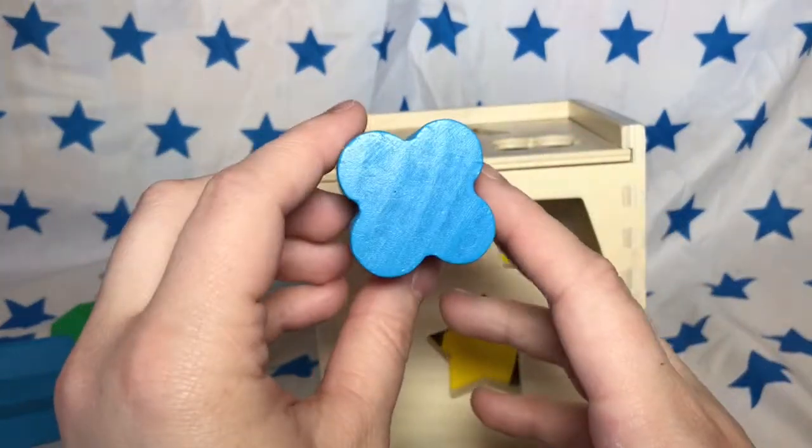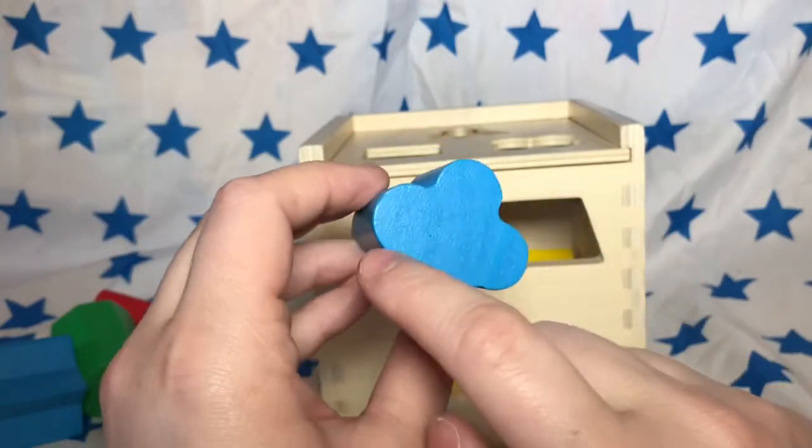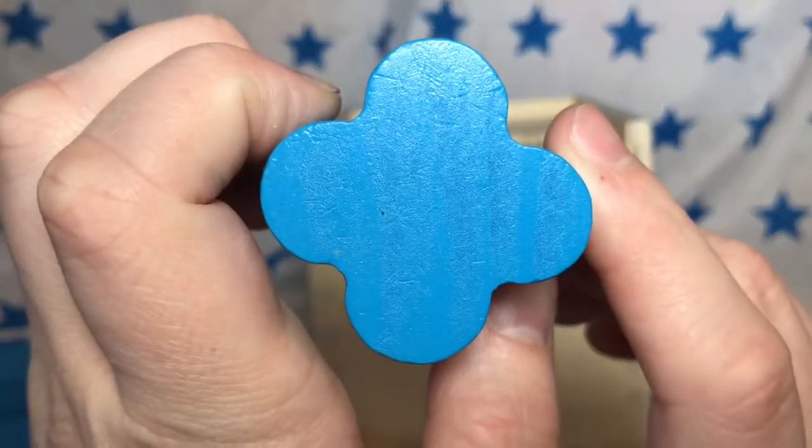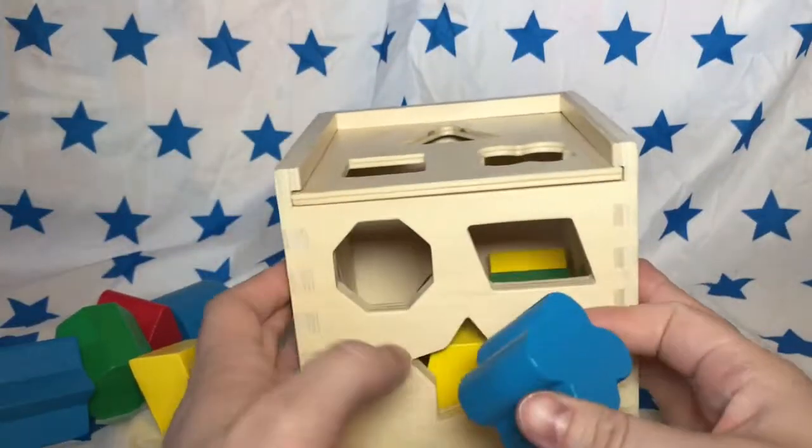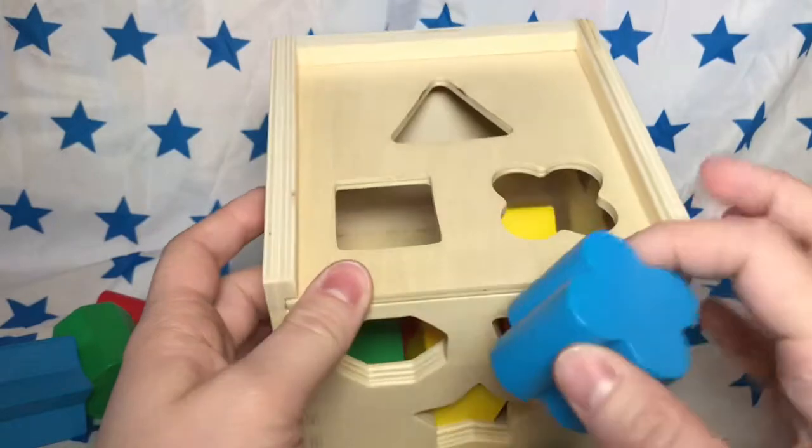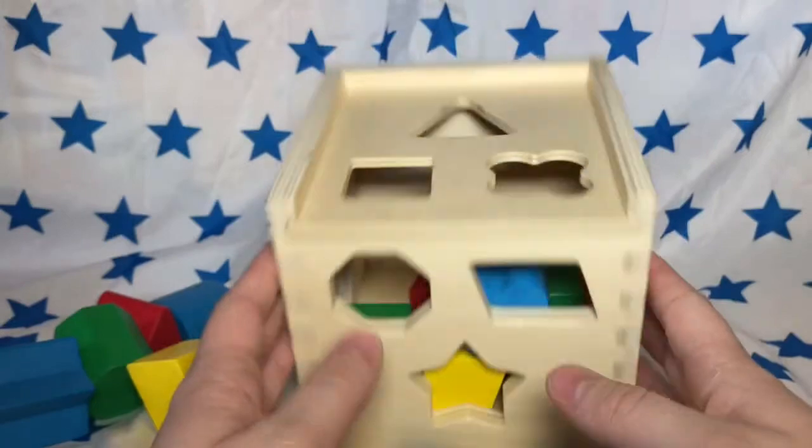This is a clover. It has four bubbles, just like a four leaf clover. A blue clover. This is a pretty unique shape. I don't think we'll have very much trouble finding it. There it is. Good job!